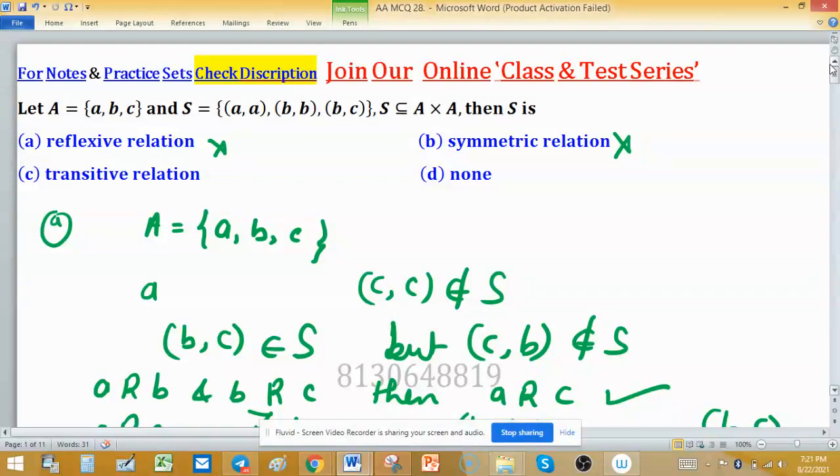Whatever we choose, if a is related to b and b is related to c, in both cases you should contain a common element. That's why this relation is transitive.